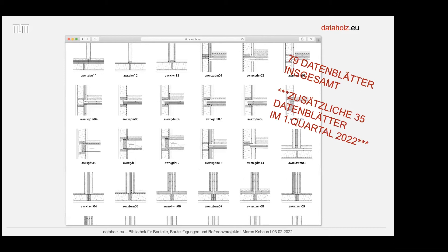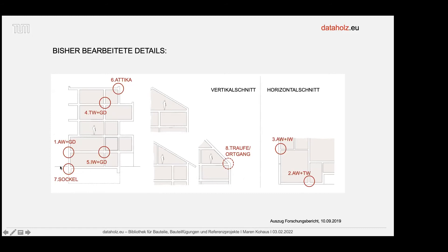Im ersten Quartal 2022 kommen noch 35 dazu, also werden es über 110 Fügepunkte sein, und das wird kontinuierlich erweitert. Im Moment sind es acht Fügepunkte: Sockelanschluss, Einbindung der Außenwand in die Geschossdecke, Attica mit und ohne Dachüberstände, Trennwand mit Geschossdecke für unterschiedliche Nutzungseinheiten, Innenwand mit Geschossdecke, Traufen und Ortgänge, Außenwand im Grundriss wo eine Innenwand anstößt, und der Punkt wo eine Trennwand von Nutzungseinheiten an die Außenwand stößt.